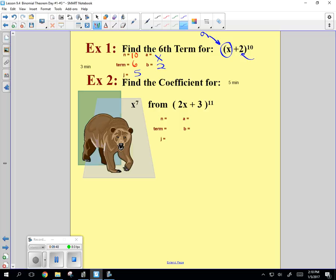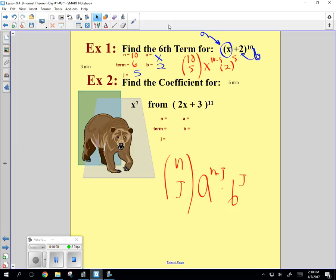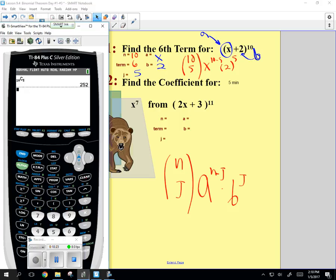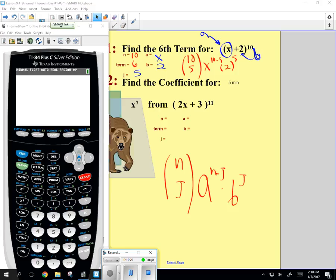So then you just go ahead and use the formula, which is n choose j, a to the n minus j, b to the j. So it's 10 choose 5. And then it's x to the 10 minus 5. That will get you your descending x. And then it's 2 to the fifth. And I need your calculator for this next one. So if I pull up the calculator here. We want to do 10 choose 5. So 10. Then hit math.